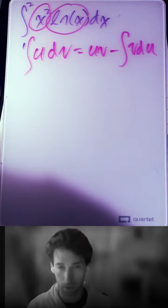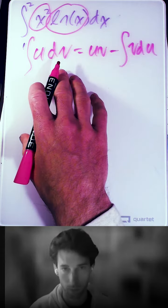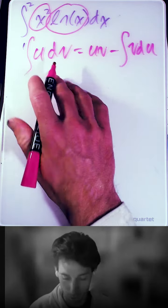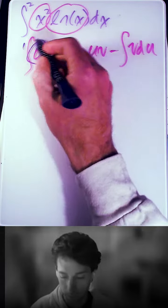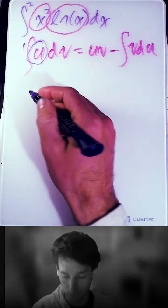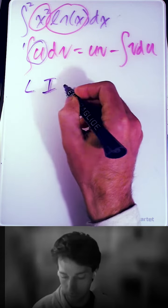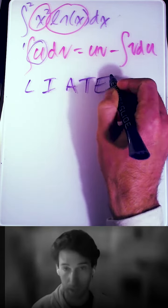So the challenge of an integration by parts problem, the first hurdle, is to choose what your u is going to be. So how do we do that? There's a very helpful acronym, LIATE.